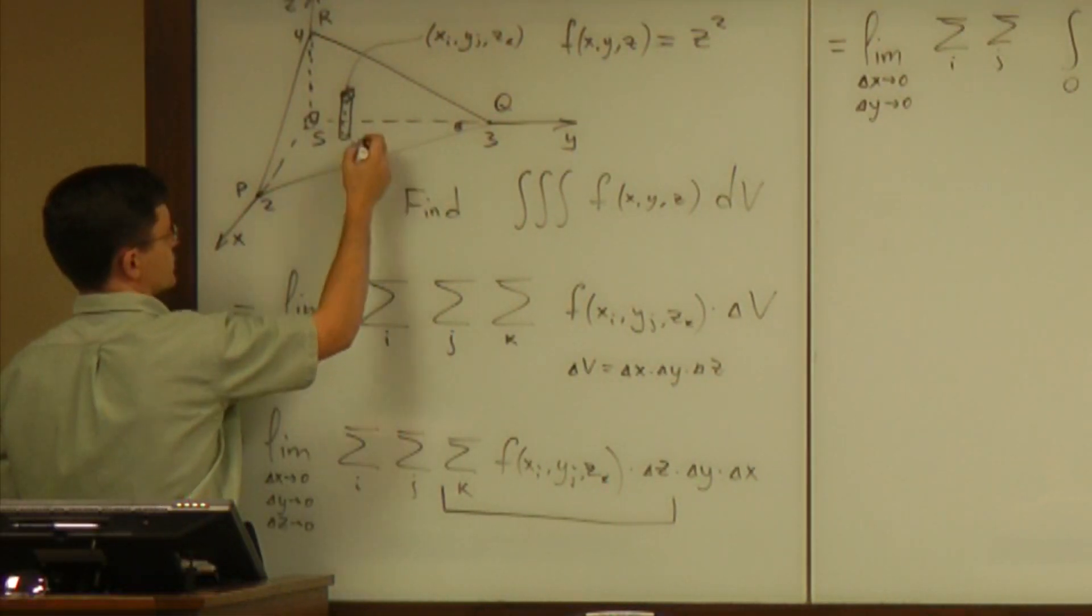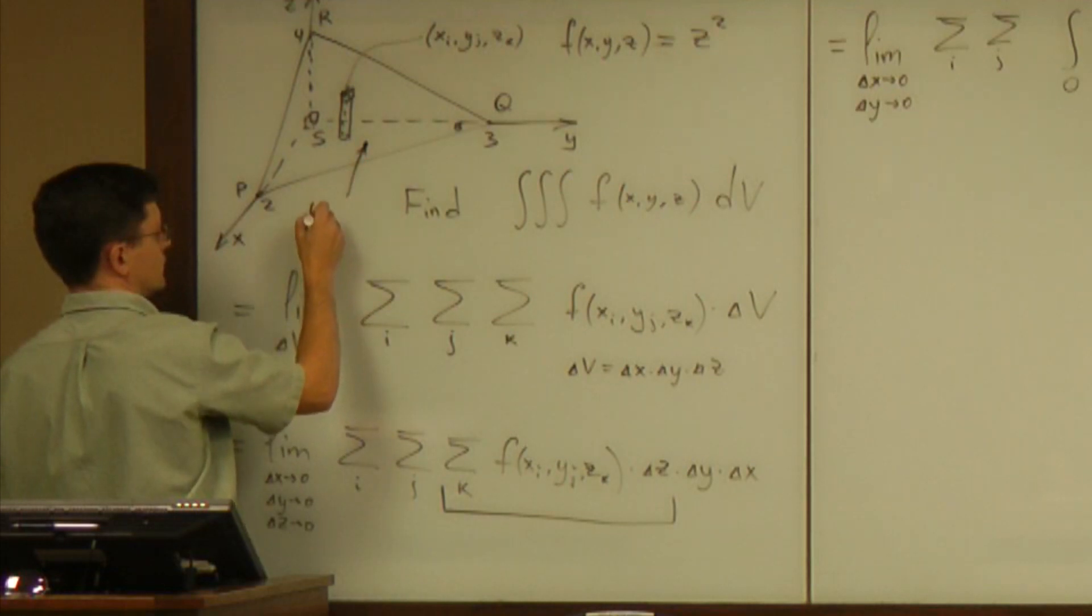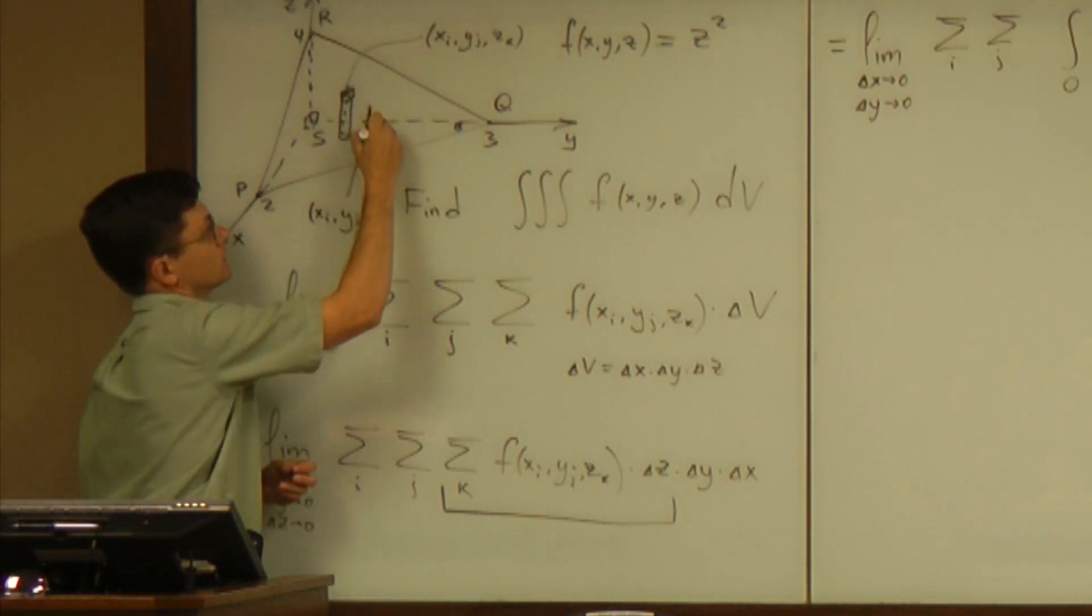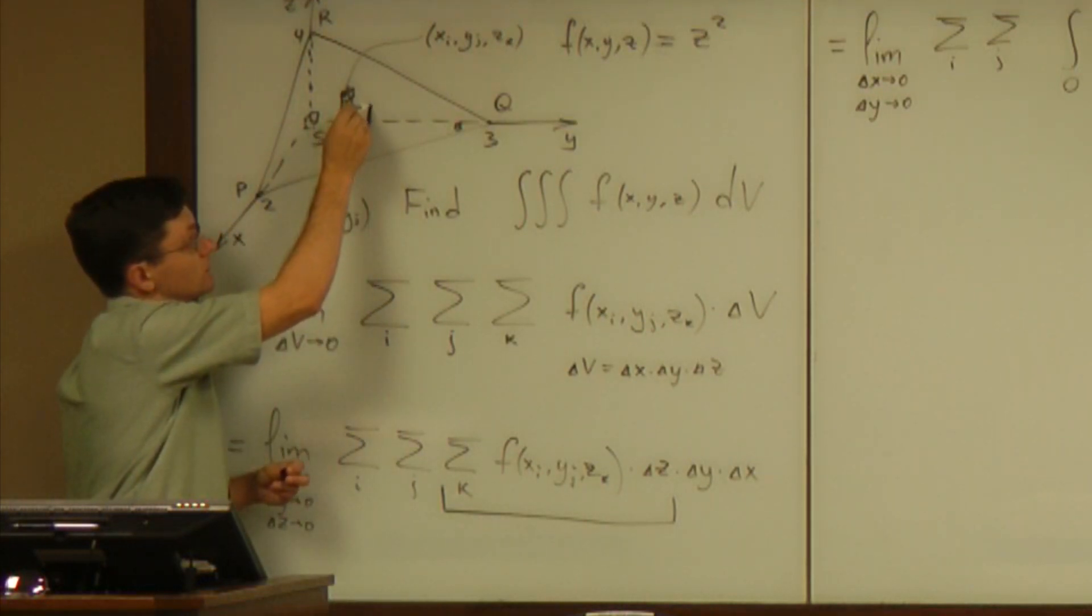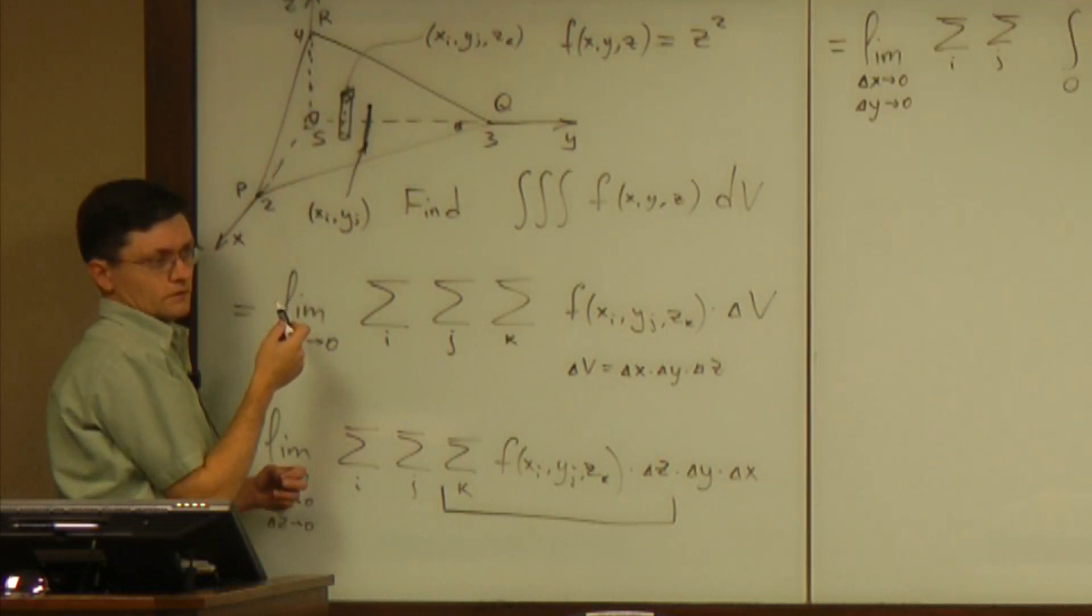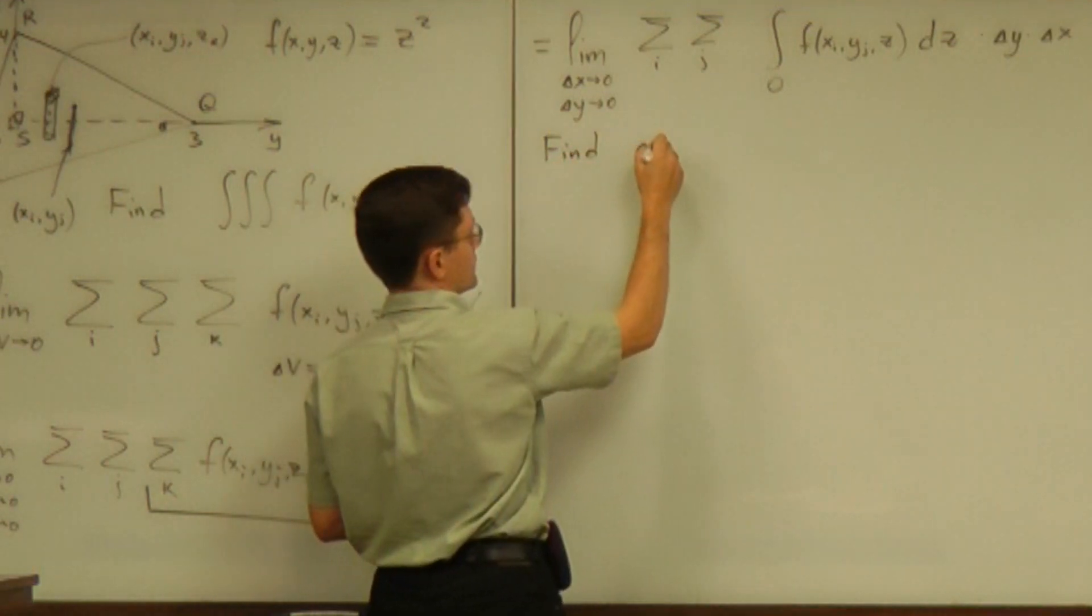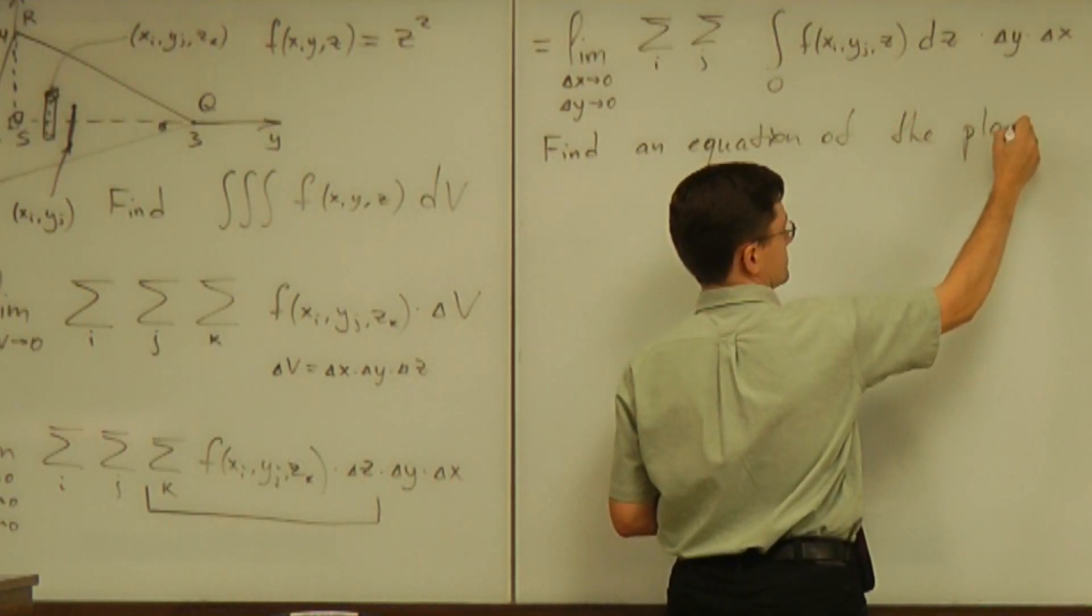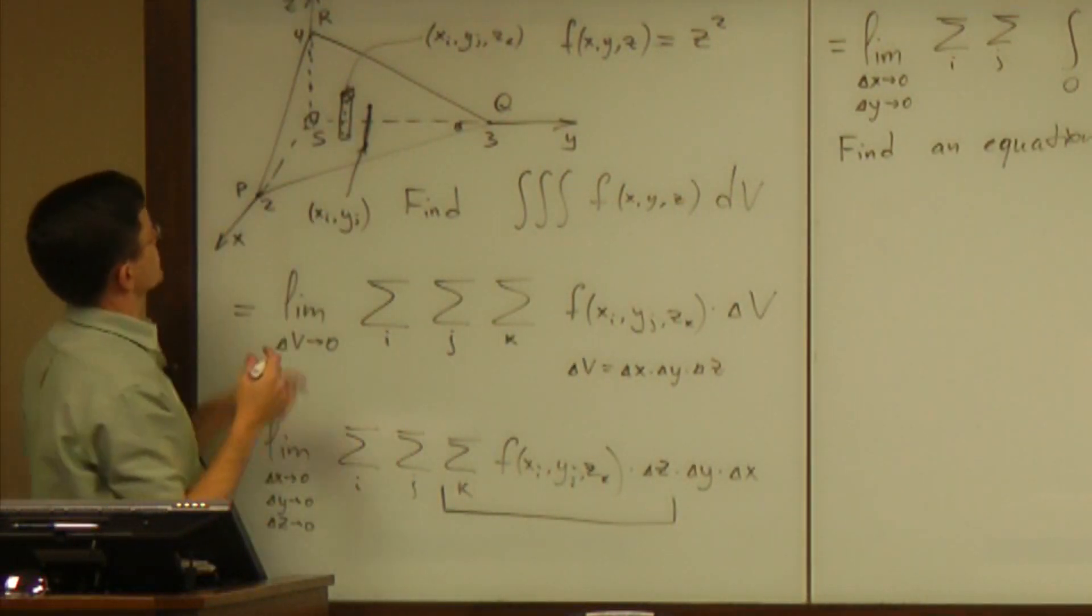So xi and yj give you a point in the xy plane. So let's look at that point xi yj. How do we determine the height of the stack above that point? We have to determine that point on the plane. So we need the equation of that plane.